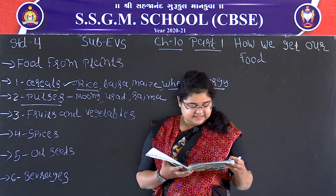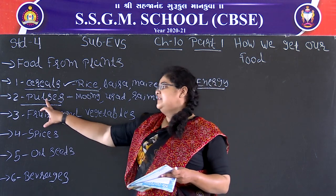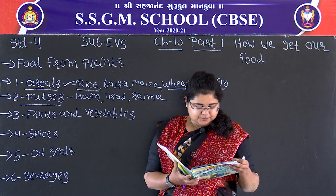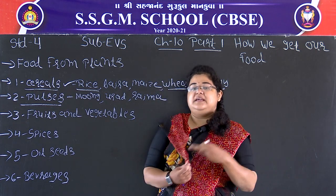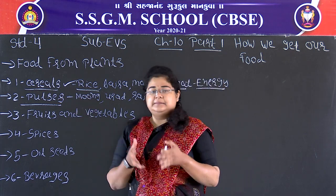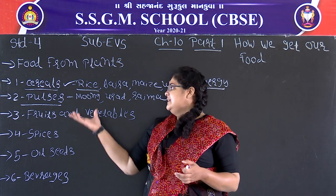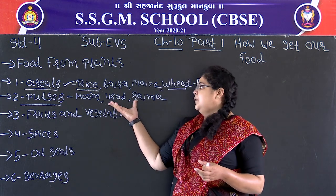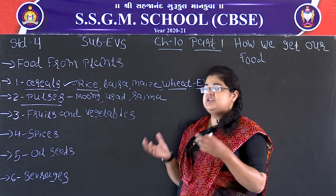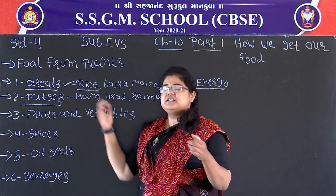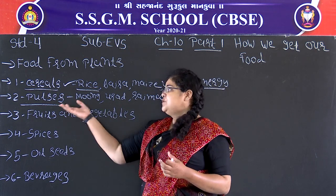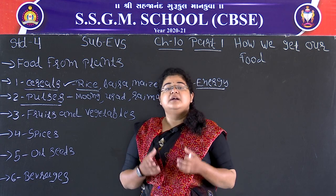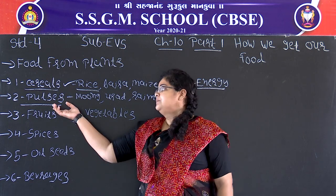These are called pulses, or lentils. They are commonly eaten in India and are very important body-building foods. Moong dal, urad dal, and rajma are very commonly used in Indian households. Pulses are a great source of protein — जो protein हमारी body को चाहिए, वो हमें pulses में से मिलता है.